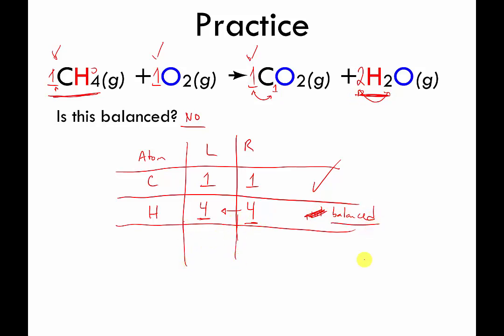So are we done? Nope. We've got another element waiting in the wings. It's oxygen. How many oxygens on the left? There are two because of this subscript of two and this one in front. So one times two is two. Two oxygens on the left.